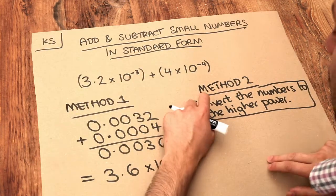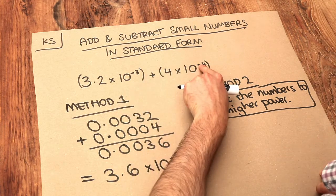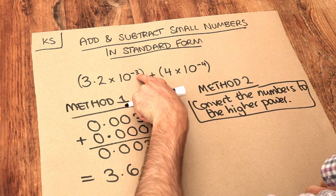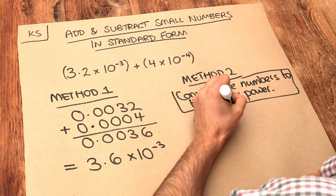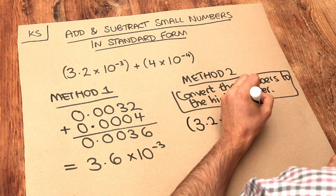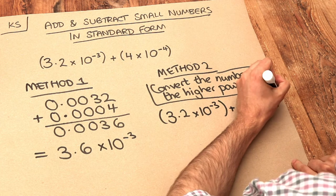So if we look at these two numbers here, which one has a higher index? Well, minus three is greater than minus four. So that's the one we're going to keep as it is. So 3.2 times 10 to the minus three. But we're going to convert this other one so that it's also 10 to the minus three, this higher power.